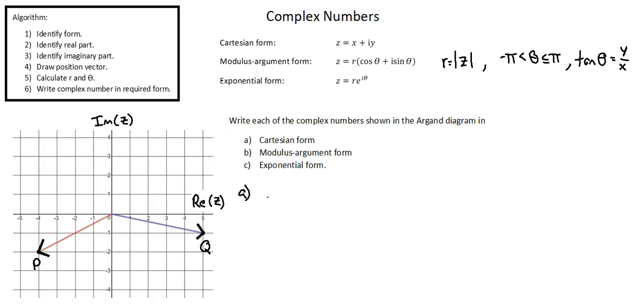A, Cartesian form: Z equals five minus i.